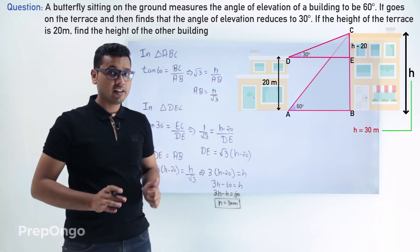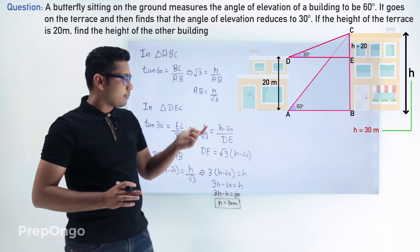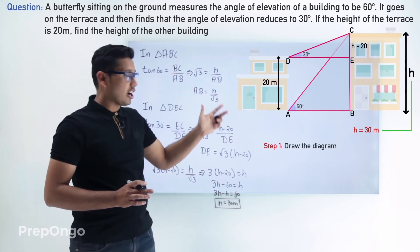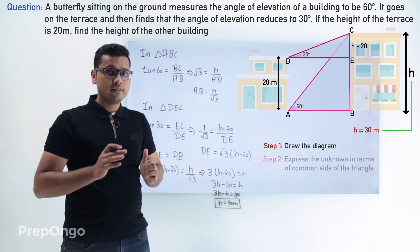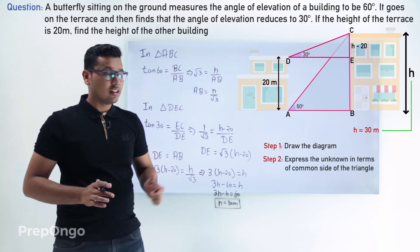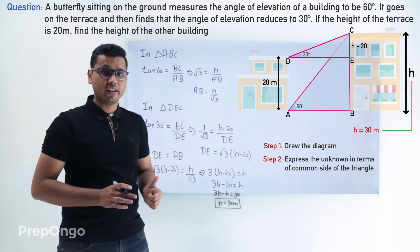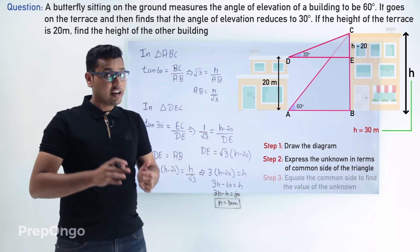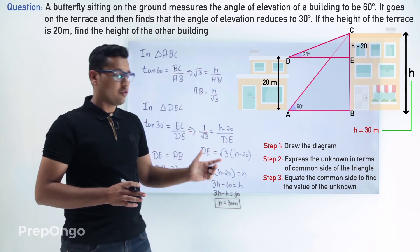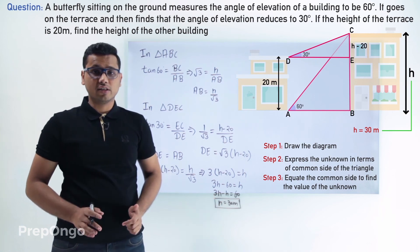So to summarize what we have done: we drew the triangles, converted the unknowns in terms of the common side of the triangles, then equated the common side lengths to find the value of the unknown, which comes out to be 30 meters.